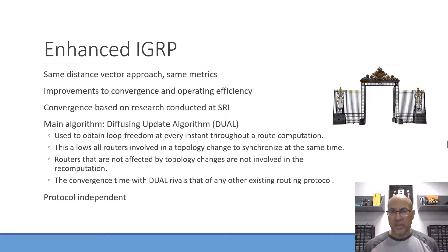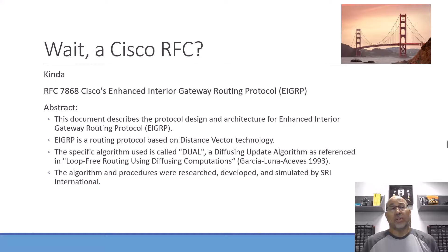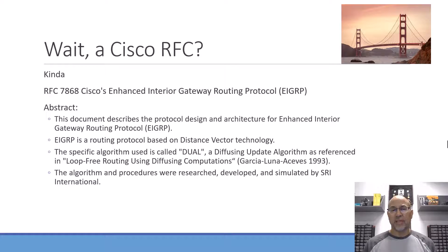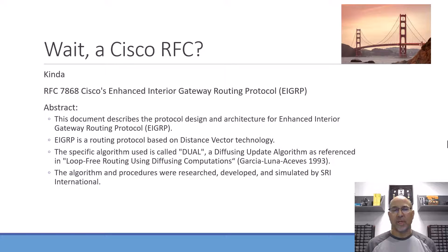Protocol independence simply means it doesn't matter what you're using at layer three. For a long time, Cisco was the only production implementation of EIGRP. RFC 7868, created fairly recently, is titled "Cisco's Enhanced Interior Gateway Routing Protocol." The abstract describes EIGRP as a routing protocol that is distance vector — the networks you want to get to are that way and they're this far away — a vector with magnitude and direction.